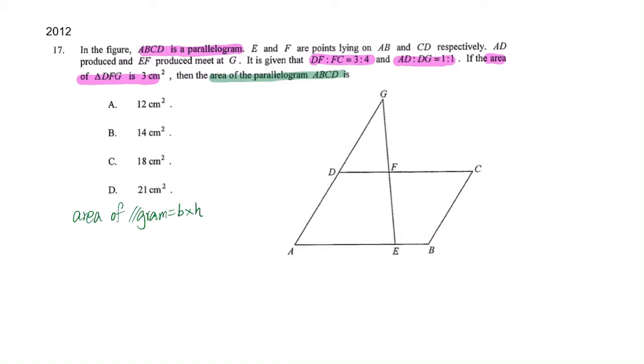Let's get writing what we are given. DF to FC is 3 to 4, and then AD to DG is 1 to 1, that means they are same. And then area of DFG is 3cm squared. This is actual value, the others are just ratios. So what we do for this question is you have to find the area.